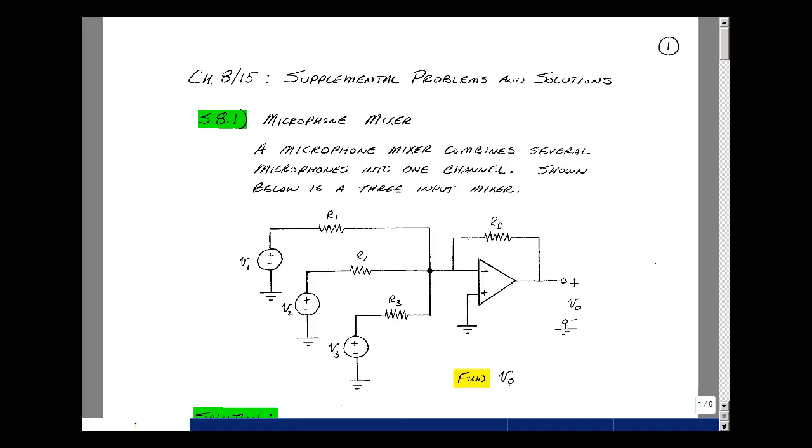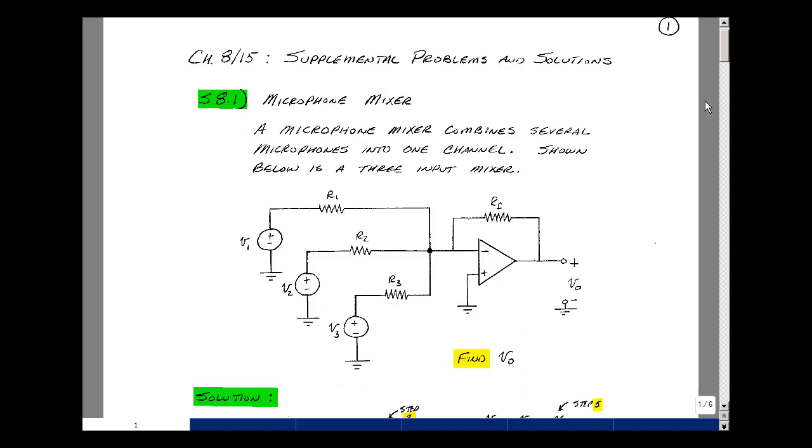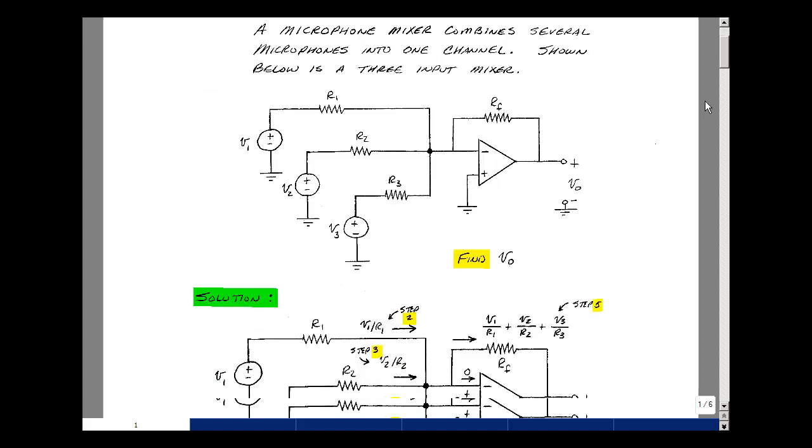This lesson deals with supplemental problem 8.1. You can find this problem in the course e-book in the Chapter 8 Supplemental Problems on page 1. The circuit shown below is called a microphone mixer and takes several microphones and combines them into one channel output. We're looking at three microphones, but you could extend this to N if you wanted to. And we're going to solve for the voltage Vout.